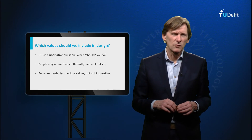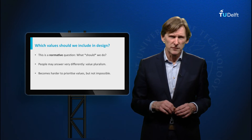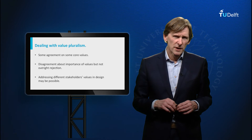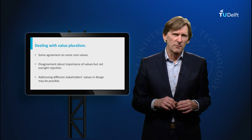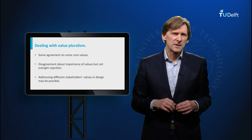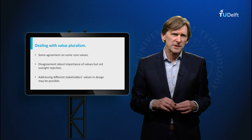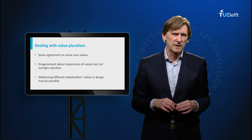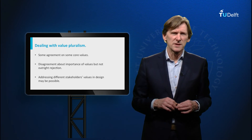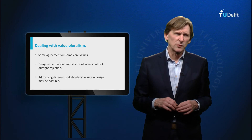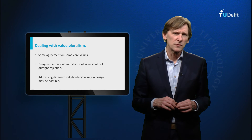There is a plurality of values and people can reasonably disagree about which values are most important. Value pluralism makes it harder to decide which values to include in design, but it doesn't make it impossible. First, despite value pluralism, there will often be agreement on some values that need to be integrated. Second, value pluralism often means people disagree about which values are most important, but they may still agree on which values are relevant to take into account. For example, you may disagree whether safety or sustainability is most important, but most people would agree that both should be incorporated in the design of a car. Third, it may sometimes be possible to design technologies that respect different values of different groups and stakeholders.